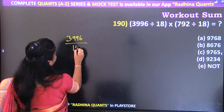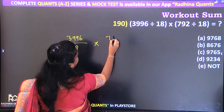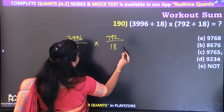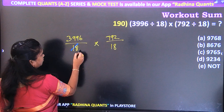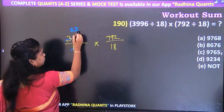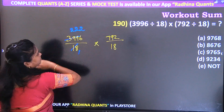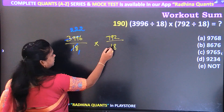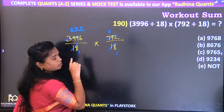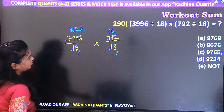Question 191: 3996 divided by 18 into 792 divided by 18. This is the cancellation method. 1 time, 2 times 36 remaining 3. Again 2 times 36 remaining 3. Again 2 times 36. Then 1 times 4 times 72, remaining 7. Again 2 is 44. This is the way to cancel.